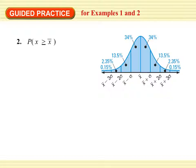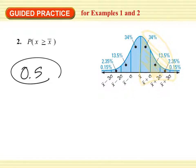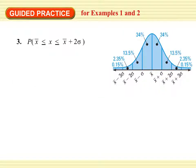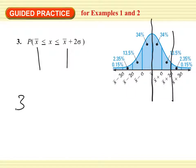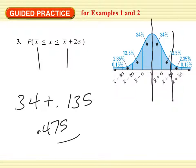How about x is greater than x-bar? It's going to be the other half, which is also going to be 0.5. Let's make it a little harder. How about x is greater than x-bar and less than x-bar plus 2 sigma? There's x-bar and there is x-bar plus 2 sigma. So we're going to add 0.34 plus 0.135, and 0.475 is our probability.